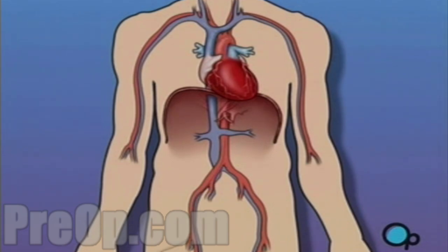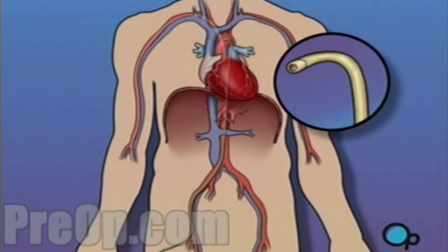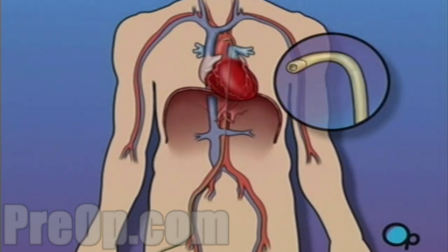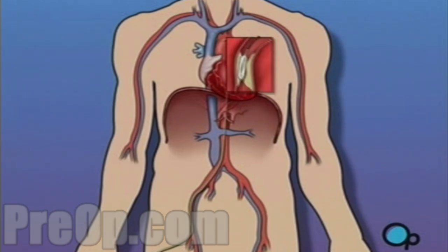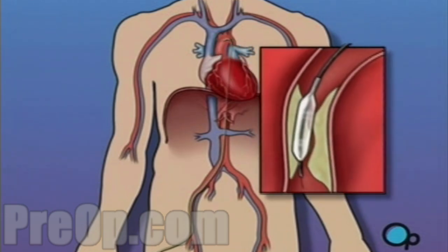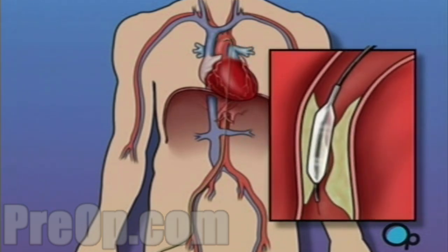During a balloon angioplasty, a heart specialist will insert a thin tube into an artery in your arm or leg and gently guide it towards the problem area in your heart. Once the tube is in place, a small balloon is briefly inflated in order to widen the narrowed artery.